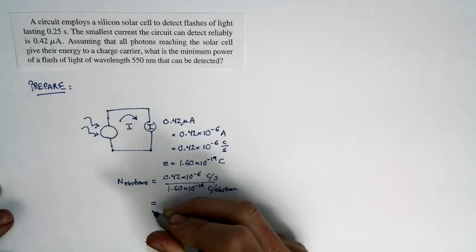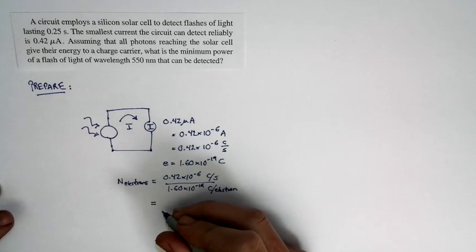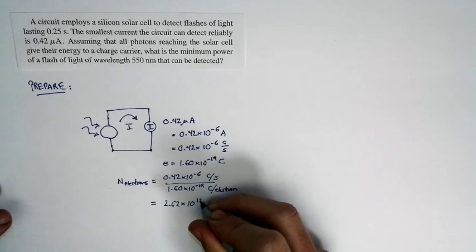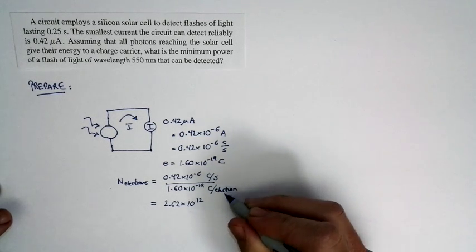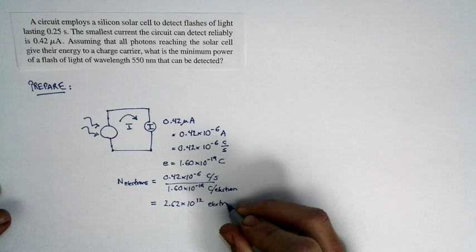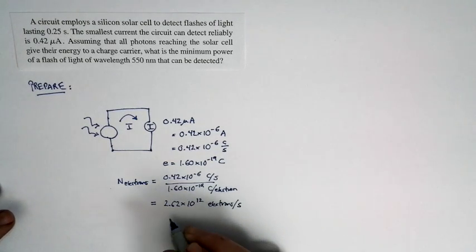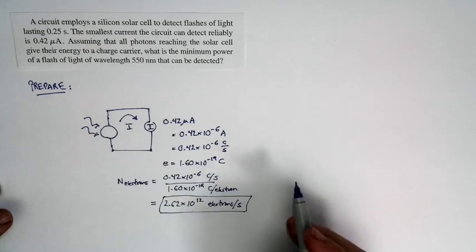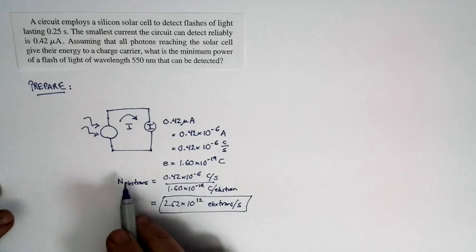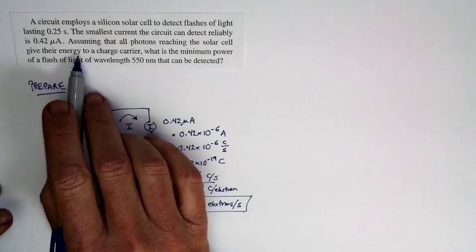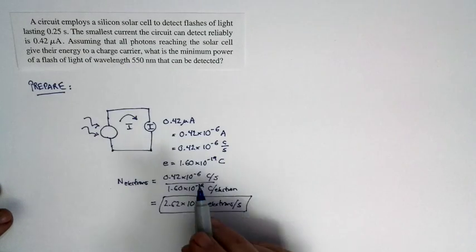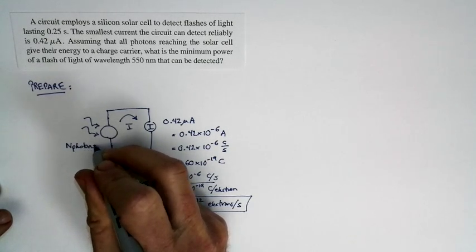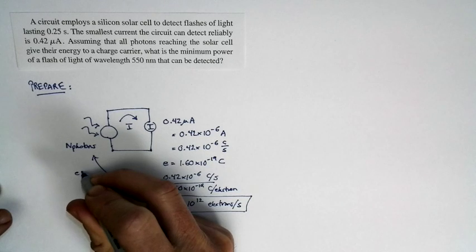What we get is 2.62 times 10 to the 12th electrons per second — that's the number of electrons going through the circuit when we have a current of 0.42 microamps. Notice that we're told to assume all photons reaching the solar cell give their energy to a single charge carrier, so the number of electrons is just equal to the number of photons. These two numbers are equal to each other.